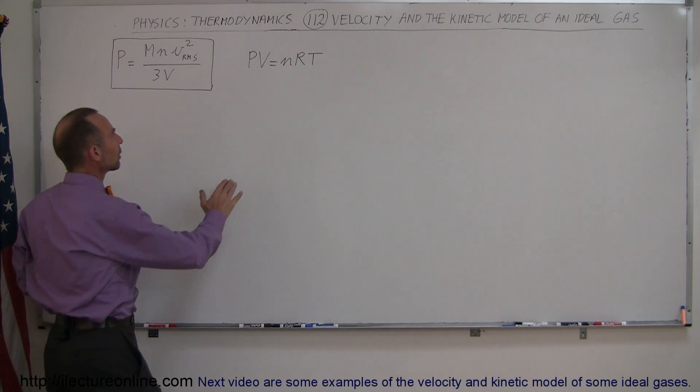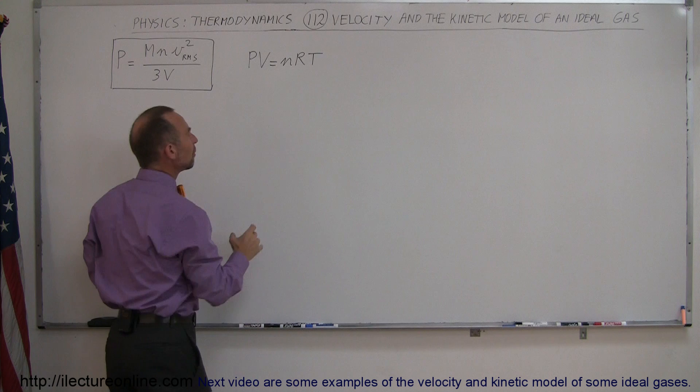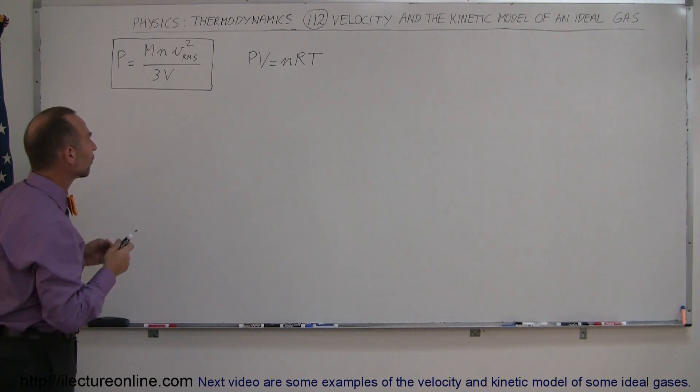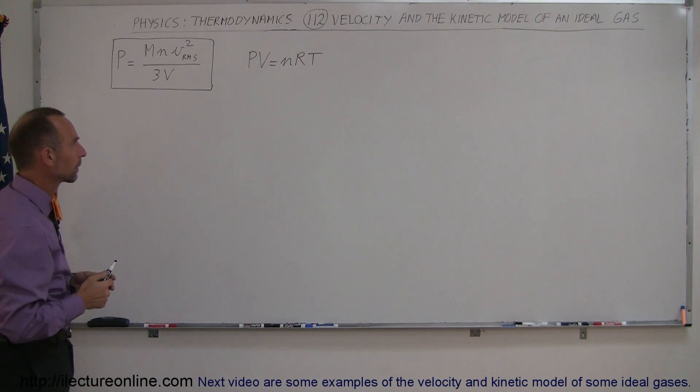If we combine that with the equation PV equals nRT, can we find an equation that relates the velocity to some other variables? Let's find out.